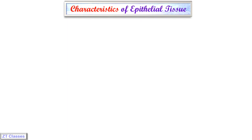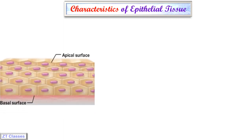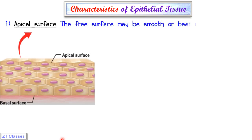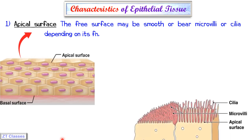The first characteristic of epithelial tissues is the apical surface — the top surface of the epithelial tissue. This top surface can be plain, or it may have microvilli or cilia depending on the function. Cilia function to transport mucus or dirt that is on the top surface. So the apical surface can have different shapes — cilia or microvilli can be present.